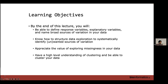At the end of this lecture, you should be able to define the anatomy of a model — a model is what all of us are trying to probe in our studies. You'll be able to name the different parts, define terms like response variable and explanatory variable, name broad sources of variation in your data, know how to approach data exploration systematically to find known sources of variation, appreciate the value of exploring missingness, and have a high-level understanding of clustering.